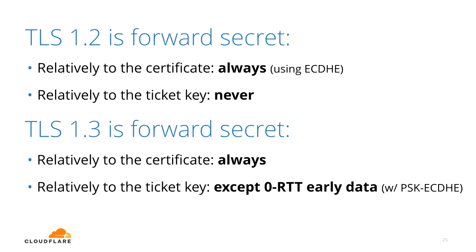To recap: TLS 1.2 introduced forward secrecy against compromise of certificate private keys using eCDHE modes, and 1.3 has that always on with no non-forward-secret mode. But for session ticket keys, TLS 1.2 never provides forward secrecy — compromising the session ticket key always means being able to passively decrypt resumed connections. In 1.3 with PSK eCDHE, only the early data can be decrypted by using the session ticket key alone.